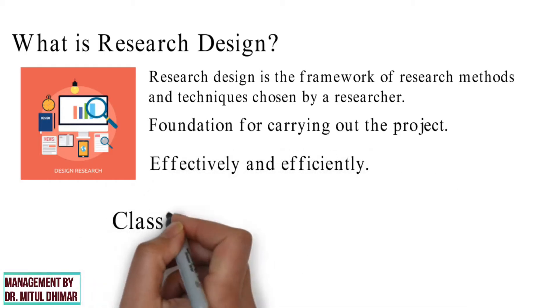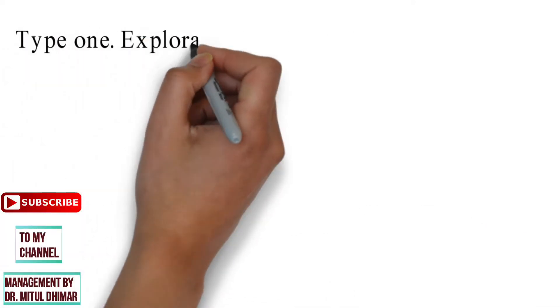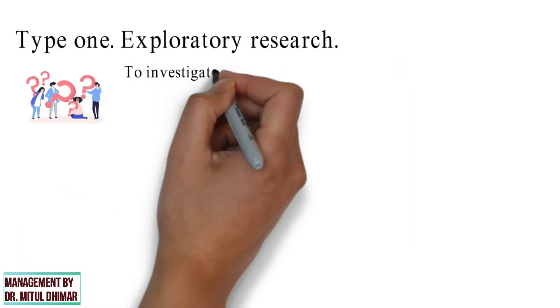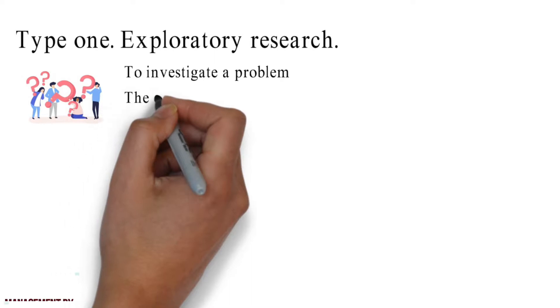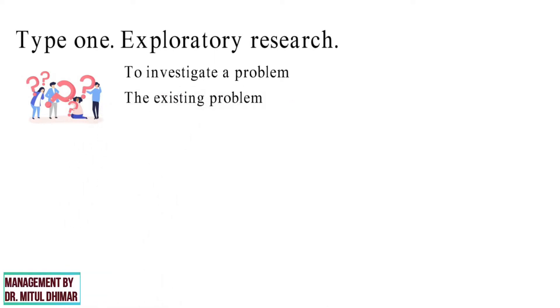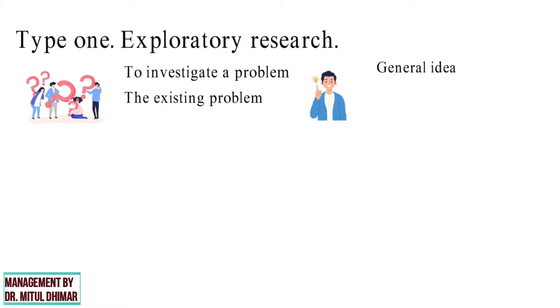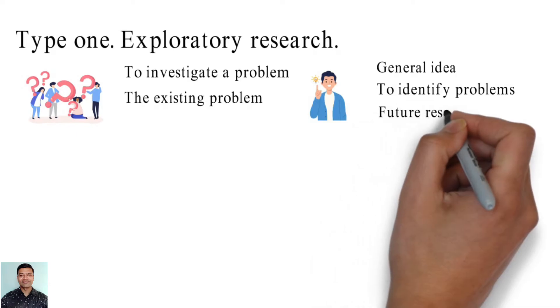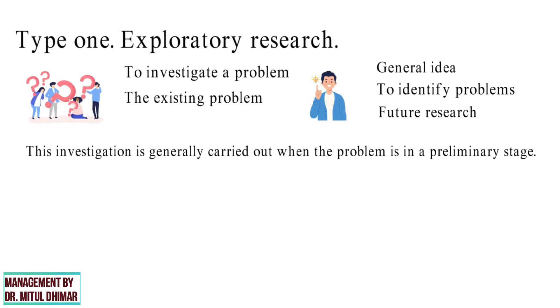So now let us study in detail classification of research design. Type 1. Exploratory Research. Exploratory research is defined as research used to investigate a problem which is not clearly defined. It is conducted to have a better understanding of the existing problem, but will not provide conclusive results. For such research a researcher starts with a general idea and uses this research as a means to identify problems that may be the focus of future research. This investigation is generally carried out when the problem is in a preliminary stage.